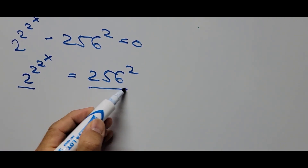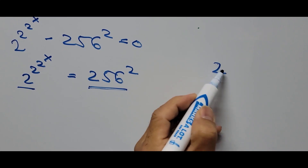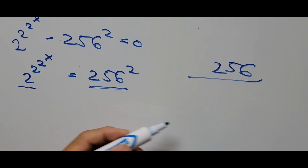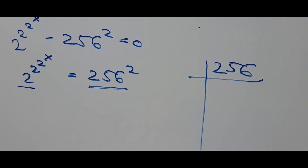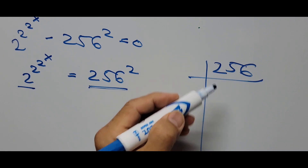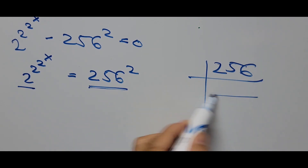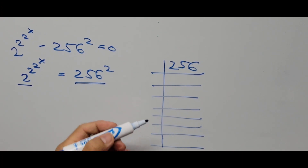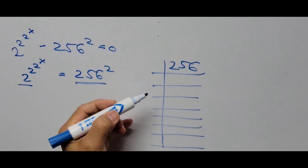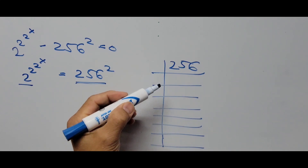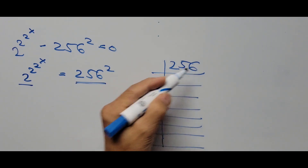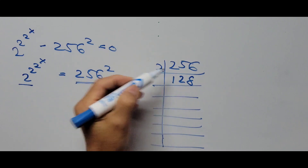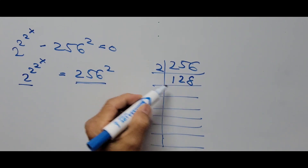To find the base, we focus on the constant 256 and find its factors. Since 256 is divisible by 2, we divide by 2 several times. I've constructed a little table here: 256 divided by 2 is 128, and 128 divided by 2 is 64.